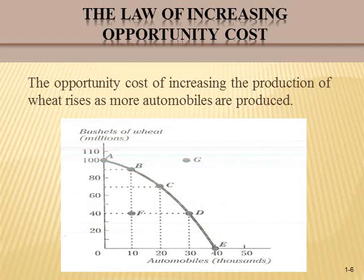Moving from B to C, the difference between 90 and 70 is equal to 20 million bushels of wheat. If the economy is at point C, the opportunity cost of an additional 10,000 automobiles moves us to point D — the difference between 70 and 40 is equal to 30 million bushels of wheat. Finally, if the economy is at point D, the opportunity cost of an additional 10,000 automobiles moves us to point E — the difference between 40 and zero is 40 million bushels of wheat.